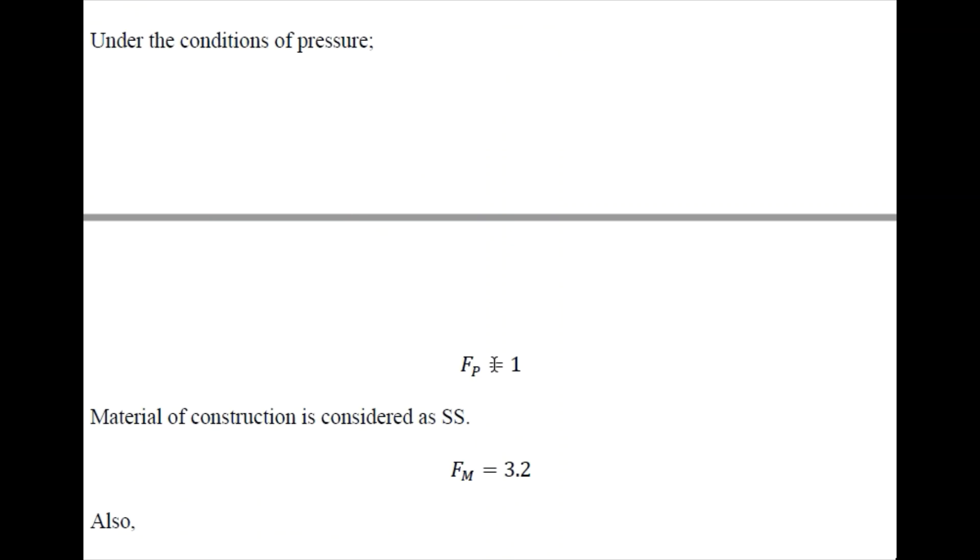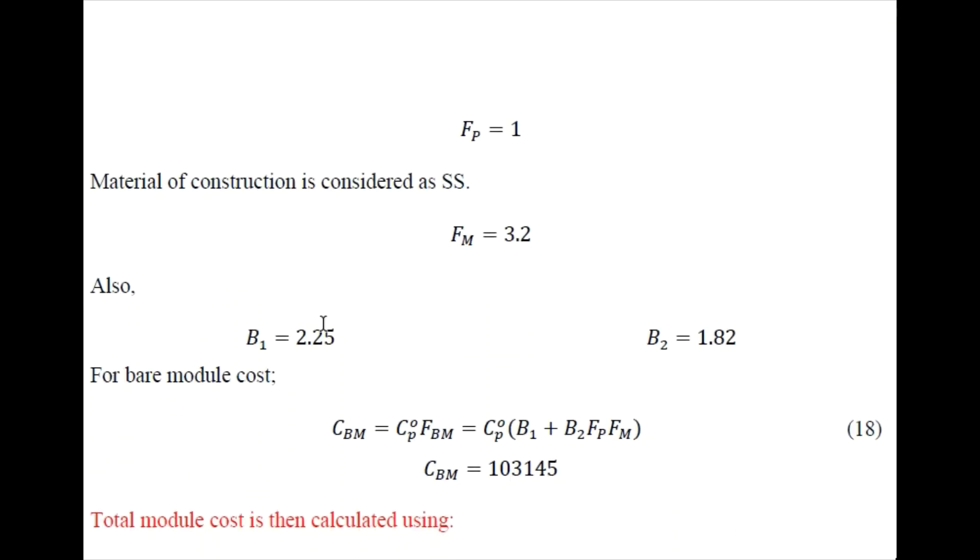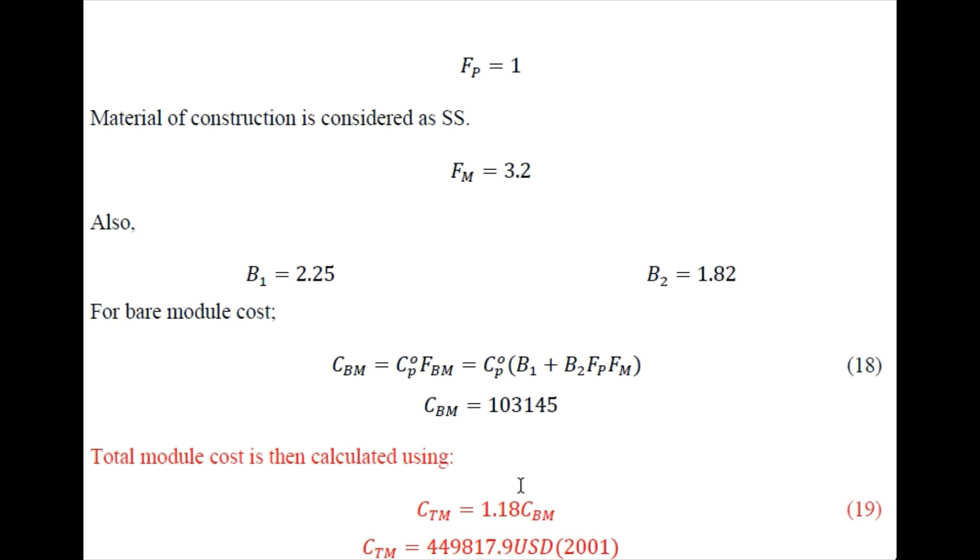Pressure conditions are normal so we can take fp factor as one. For material of construction it is taken as stainless steel, so for that we know that fm is 3.2. We can take all of these parameters from the costing book by Turton. We now have these b1 and b2, so using these values we can obtain the bare module cost. Finally, for total module cost it can be taken as 18 percent higher than bare module cost, so cbm can be multiplied with 1.18. But be careful that this value is for 2001 because all of these factors are for 2001. So we need to convert this value from 2001 to current year, that is 2023. That's all.